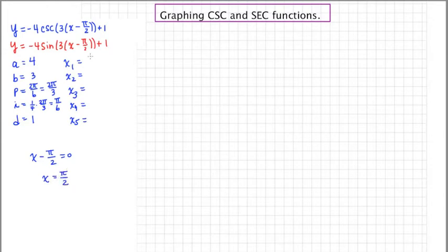So this graph is going to start at pi over 2. Sometimes this is called the horizontal displacement. So this is going to be displaced horizontally, pi over 2 units to the right.